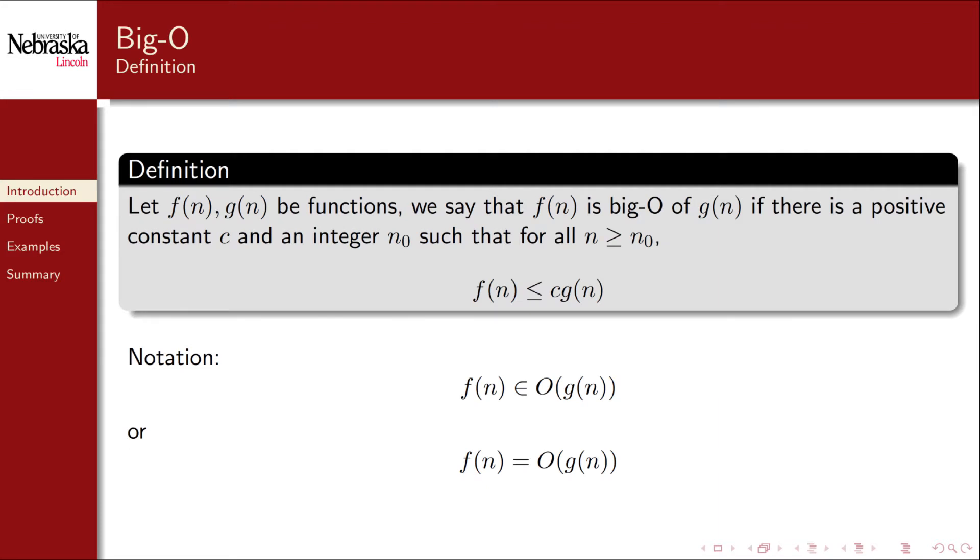To capture this idea, we use asymptotic analysis, more specifically big O analysis. Formally, let f and g be functions. We say that f of n is big O of g of n if there is a positive constant c and an integer n0 such that for all values of n greater than or equal to n0, f of n is bounded above by c times g of n.